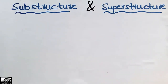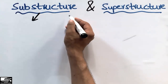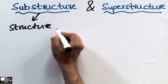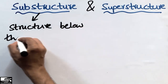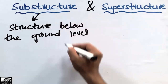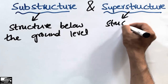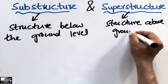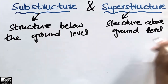To define the substructure, it is the structure which is constructed below the ground level. This type of structure is called the substructure. The superstructure can be defined as the structure above the ground level — we call this type of structure the superstructure.